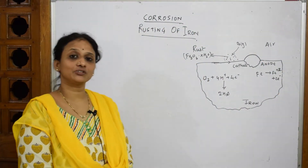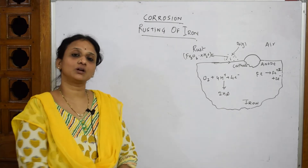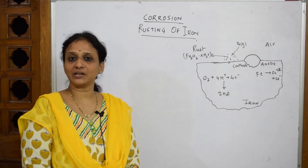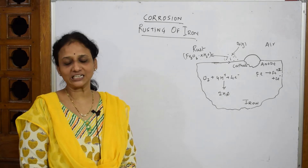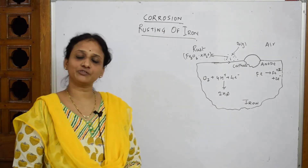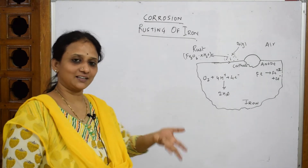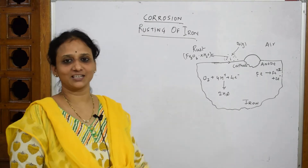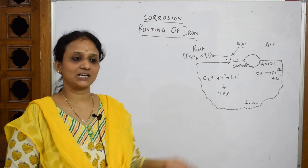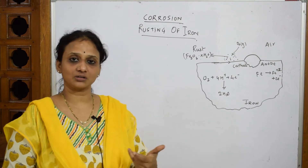Let's start with the last concept of the chapter: corrosion. As a child you would have learned that corrosion is the eating up of metal by environmental conditions — that's what you studied in grade 6. Now we are going to study the concept of rusting of iron under corrosion. The grade 12 definition includes the presence of electrolytes like sodium chloride, sulfur dioxide, or air and water, all of which corrode the metal surface.